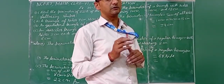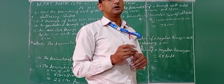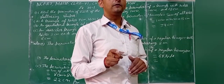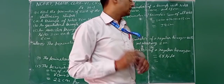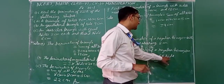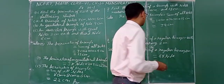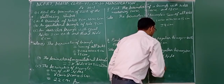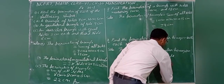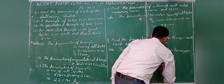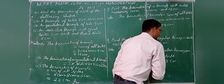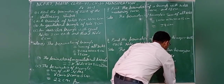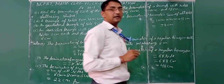In a regular figure, all sides are equal, so we multiply the number of sides by the length of one side. Number of sides is six, one side is 8 cm, so 6 into 8 = 48 cm. Is that clear students?